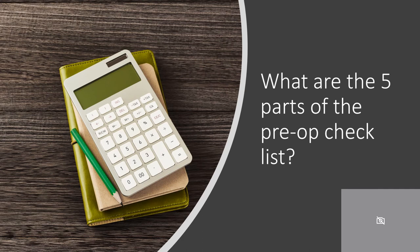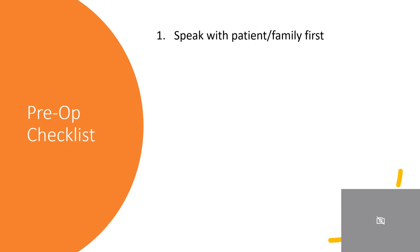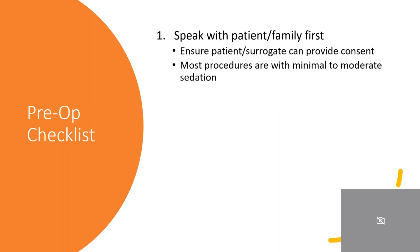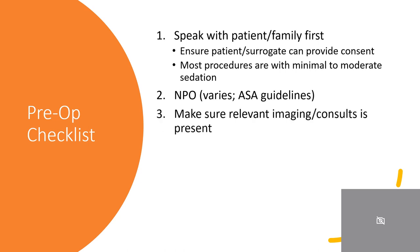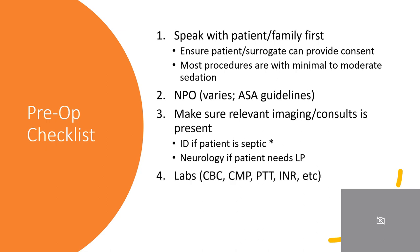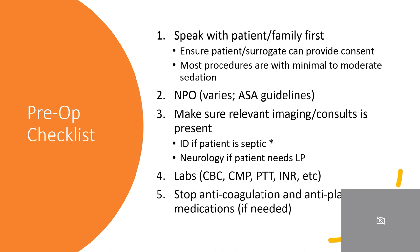So, pop quiz — what are the five parts of the pre-op checklist? The five parts are: one, ensure that the patient or surrogate is present to provide consent, and that the decision-maker is aware that most procedures are performed with minimal to moderate sedation, not general anesthesia; two, place the patient NPO if needed; three, ensure the relevant imaging and consults are present, including ID if the patient is septic and neurology if the patient needs a lumbar puncture; four, ensure the relevant labs are ordered; and five, stop anticoagulation and antiplatelet medications as needed.